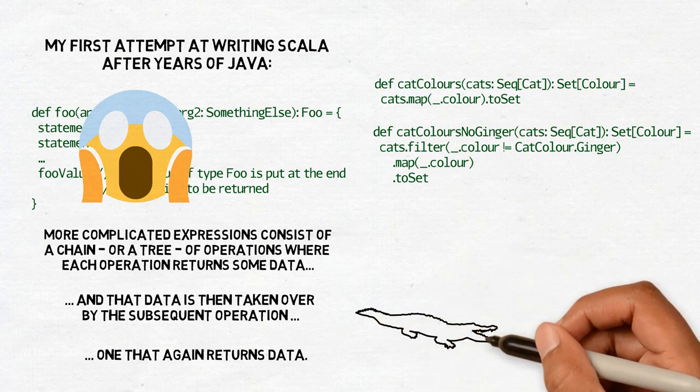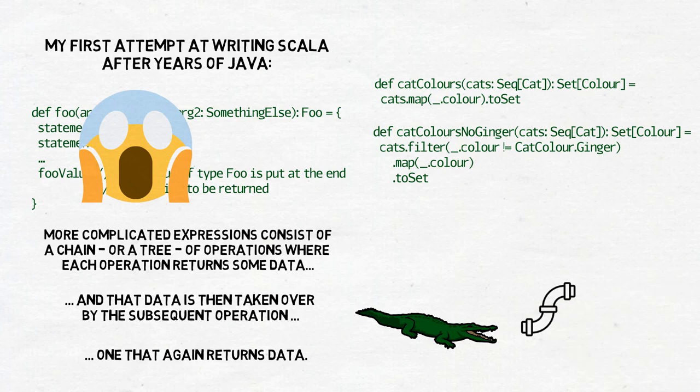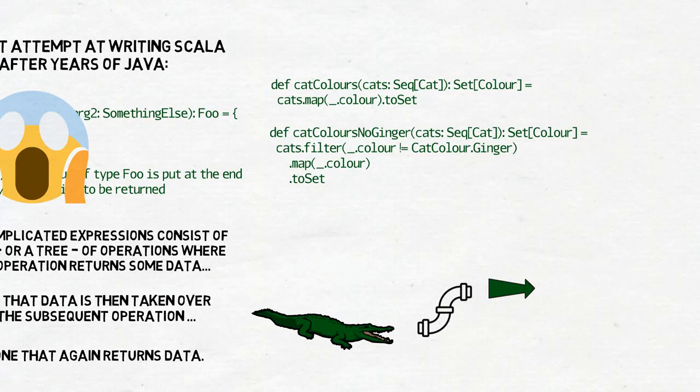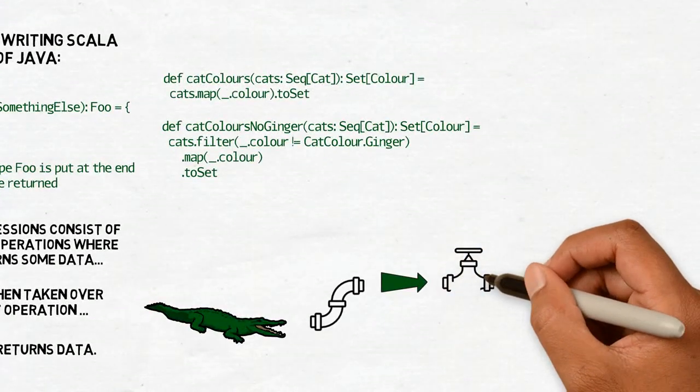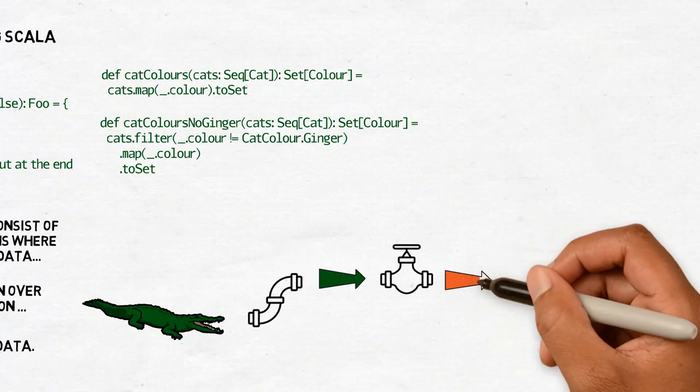I like to imagine it as a sequence of interconnected pipes, and data being something I want to push through those pipes to the other end. With each used pipe, data changes somehow, and eventually comes out as something very different from what I put in in the beginning.